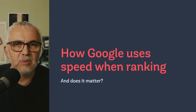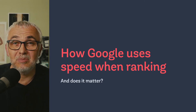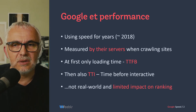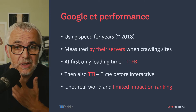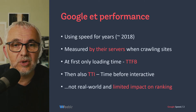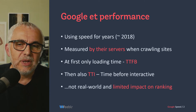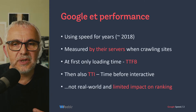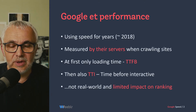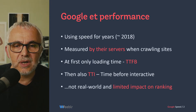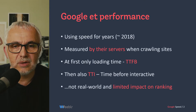So how does Google use speed when ranking pages, and does it matter for you? Using speed in ranking results is something Google has been doing for years. They started communicating about it at the start of 2018. The way they were doing it at the time was to measure how fast your site was responding to their server when they were crawling and analyzing a page. It was simple at first — how much time before your site responded — and this was called the TTFB, the time to first byte.